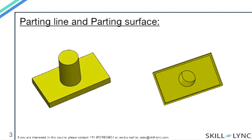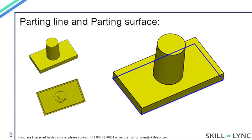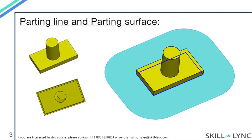So let's take this simple model for understanding where exactly the parting surface lies in the mold. This model which you see is hollow as you can see in the image on the right. So let's say I want to create a mold for making this part. I will first select a parting line for the mold. In the figure, you can see the parting line is indicated by the blue line. Now, according to the location of the parting line, a parting surface will be formed. In the diagram, the blue surface is the parting surface for the mold. So this is the surface where the core and the cavity for the model will meet. The portion of the mold block above the light blue surface will form the cavity.